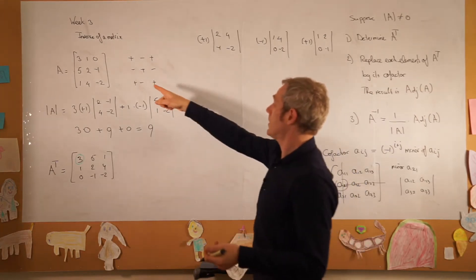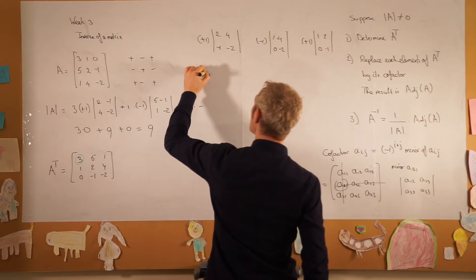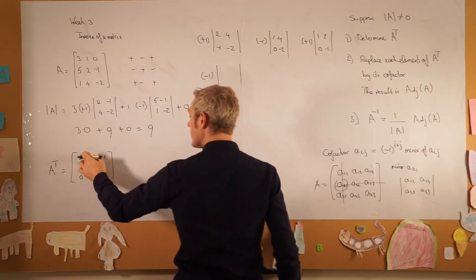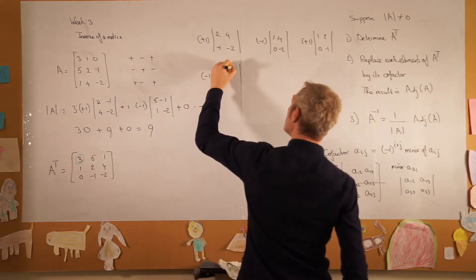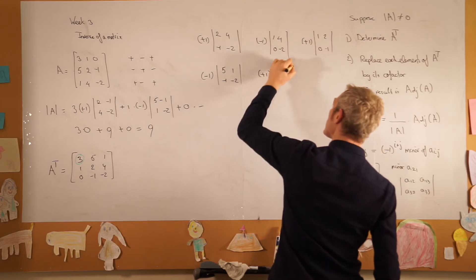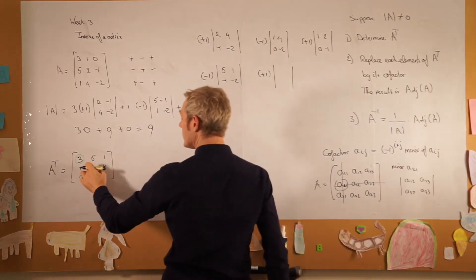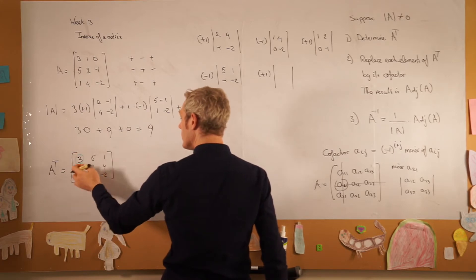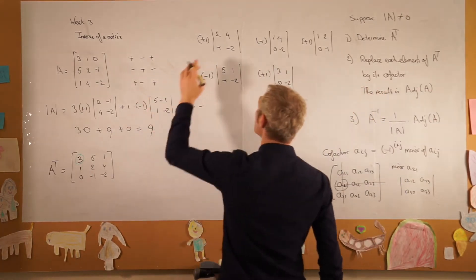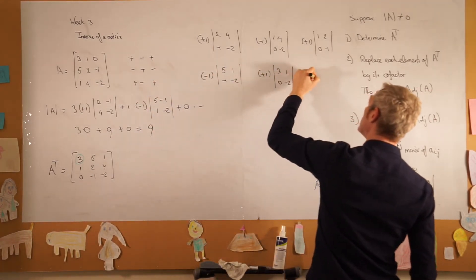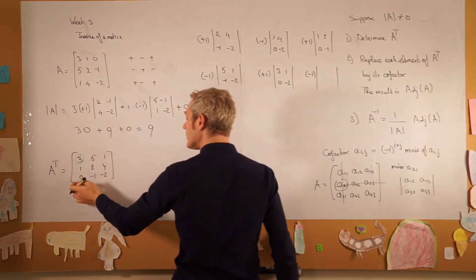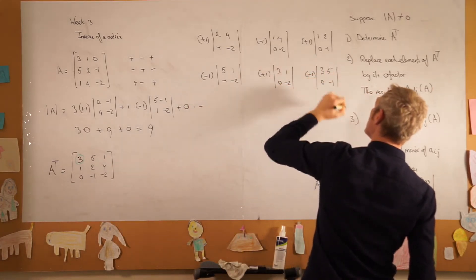Moving to the second row, which starts with a minus sign: minus 1 times the determinant. Removing the second row and first column gives 5, 1, minus 1, minus 2. The next element has a plus sign; removing that row and column gives 3, 1, 0, minus 2. The third element has a minus sign: minus 1 times the 2 by 2 determinant, removing that row and column gives 3, 5, 0, minus 1.